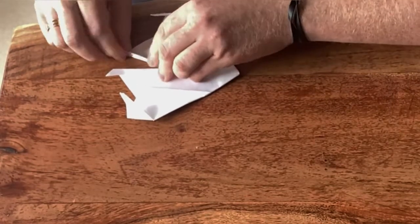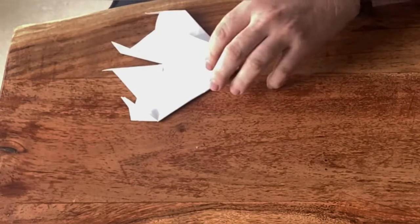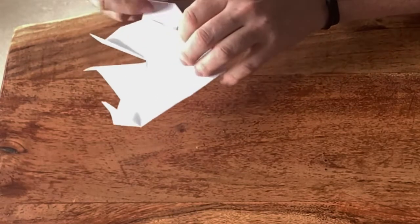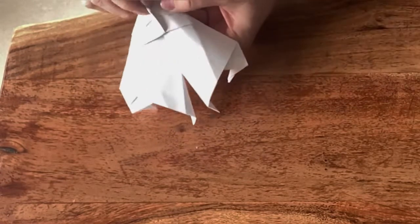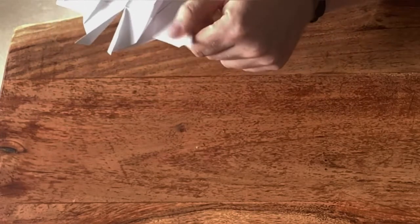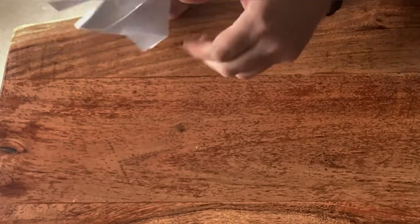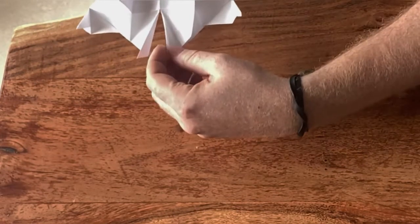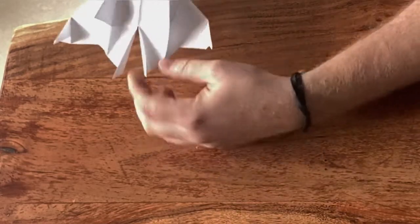And then we are almost finished. So all you need to do now is put all the angles right. So you want to open this up, make sure it's straight. Then put this out, make sure the wing angles are up a little. Try to get these to stand up straight.